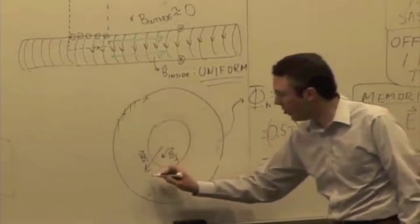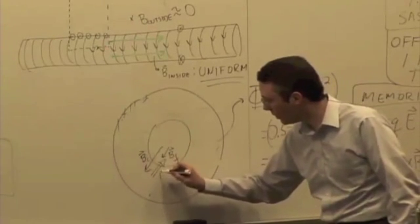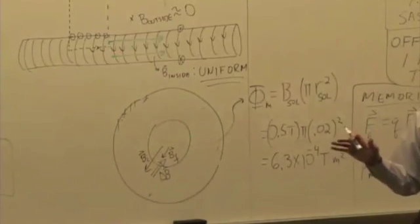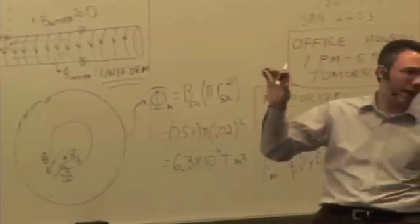Delta B is in. And it's a little bit hard to draw in perspective here. But delta B is pointing in. Negative dB/dt is then pointing out.